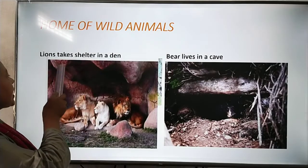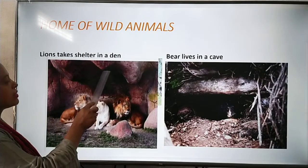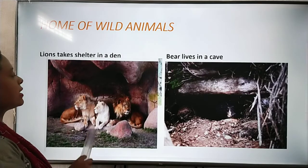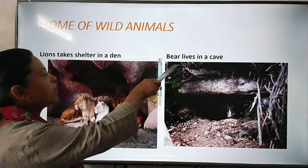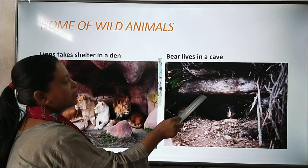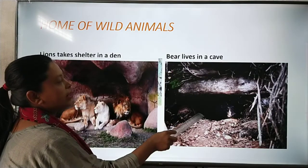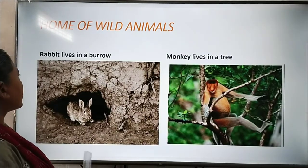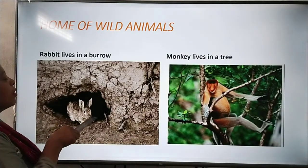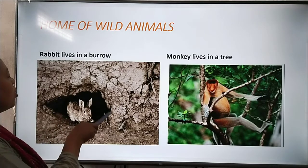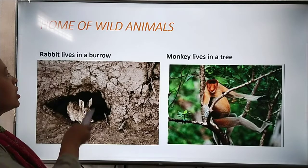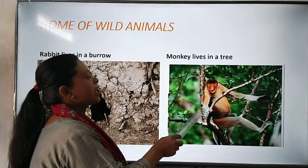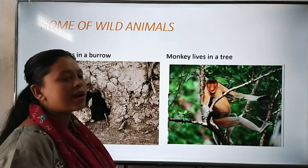Lion takes shelter in a den — this is a den and these are lions. Bear lives in a cave — this is a cave. Next, rabbit lives in a burrow — this is the home of rabbit, it is called a burrow. Monkey lives in a tree.